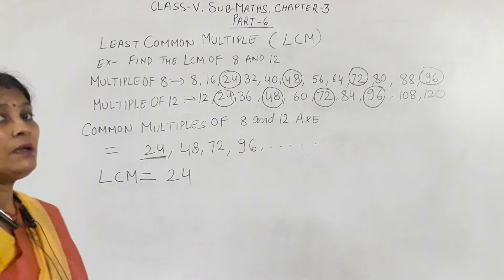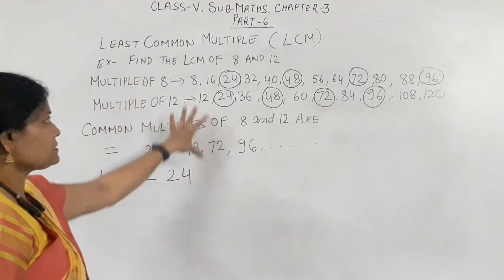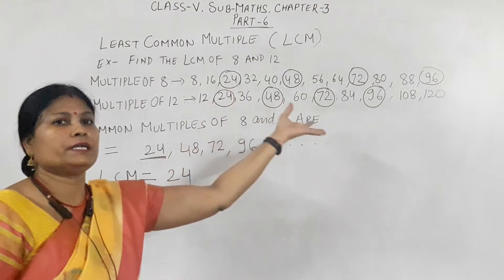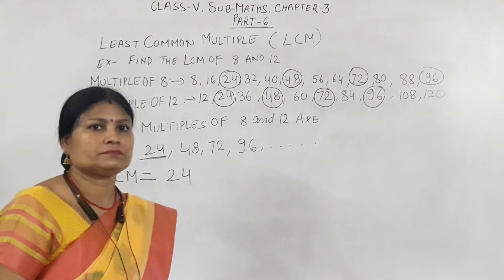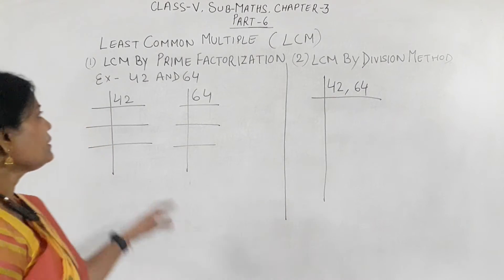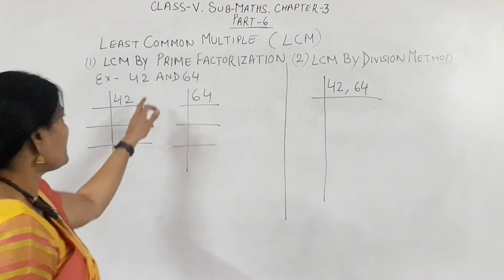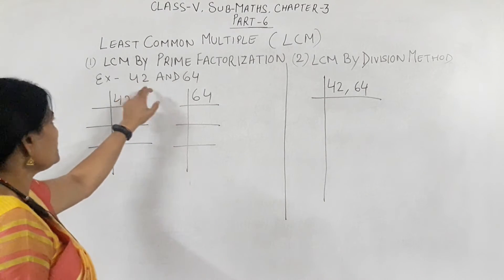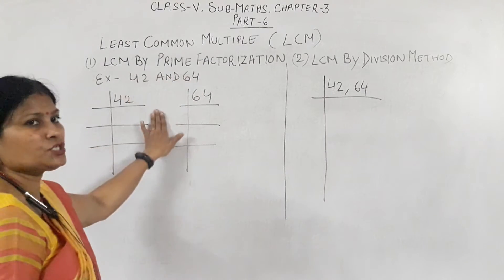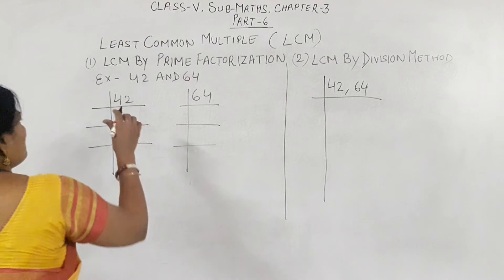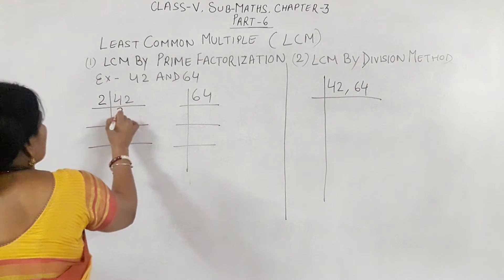LCM can also be found by two other methods. We will now learn the first: the prime factorization method. We already know how to do prime factorization — the composite number is divided by prime numbers. For example, 42: divide by 2, we get 21. Then 21 is divided by 3, giving 7. So 42 equals 2 multiplied by 3 multiplied by 7.